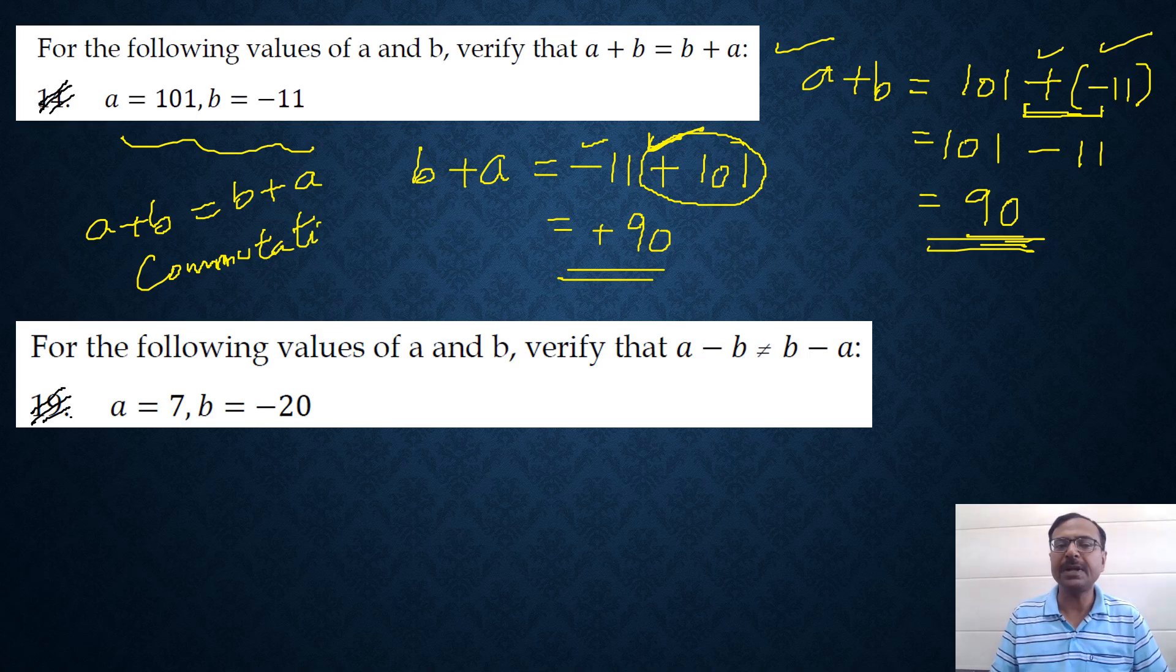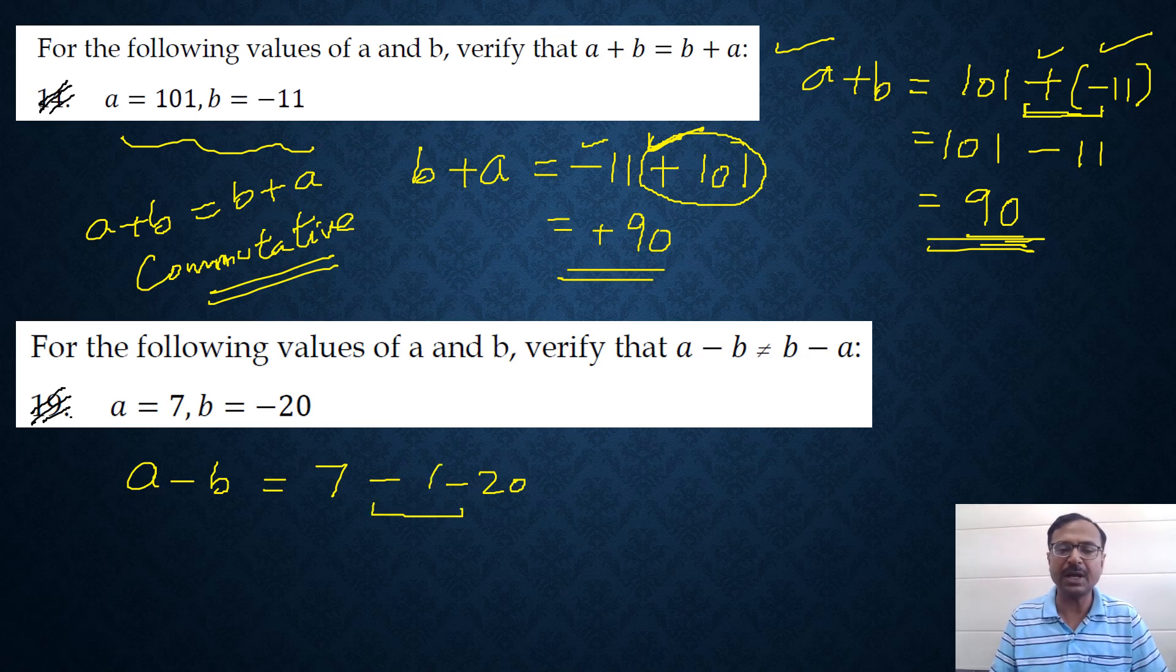So commutative property or commutativity of addition of integers is very important. Likewise, if you see commutativity of subtraction of integers, the difference A minus B and B minus A is not equal in case of integers. Let's see why. A minus B when A is 7 and B is minus 20. So we are trying to subtract them. Now you have two signs together. So I will put this in bracket and therefore this becomes 7 plus 20 which is 27.